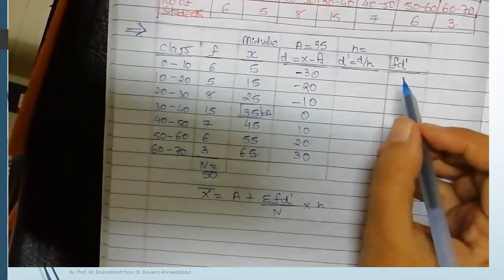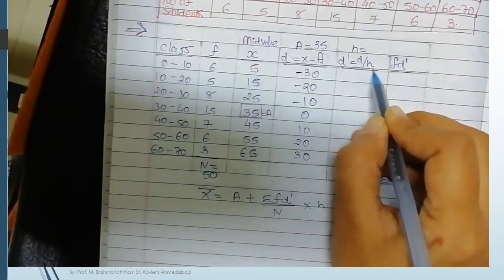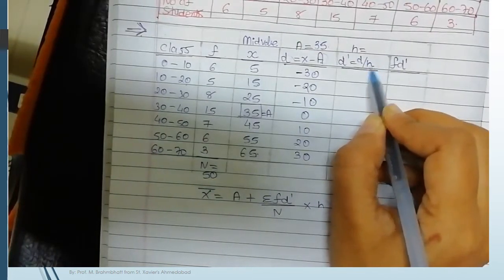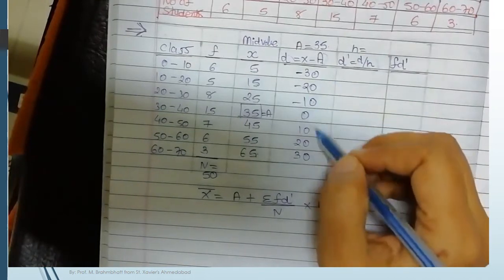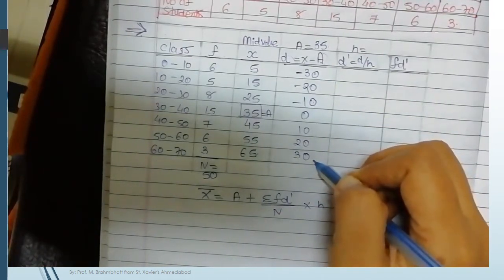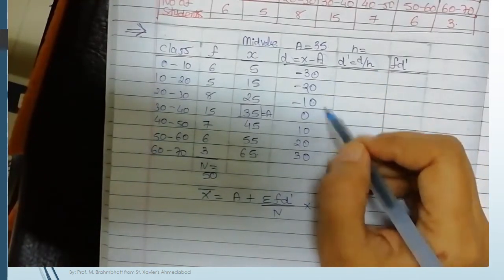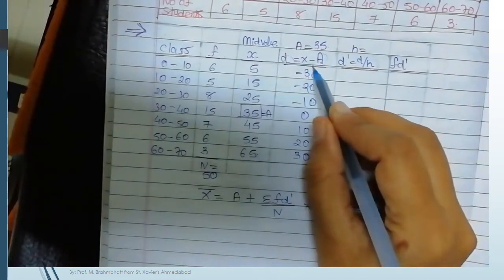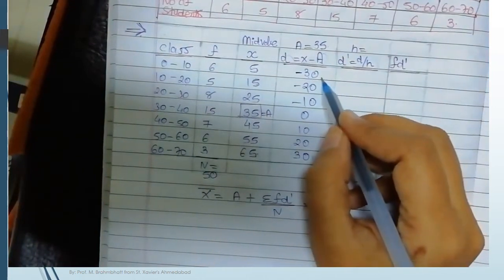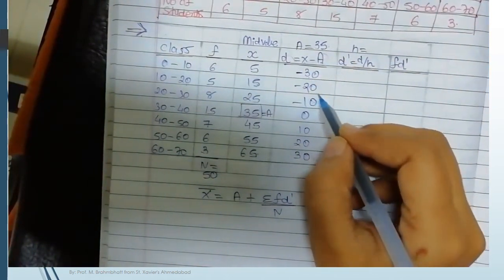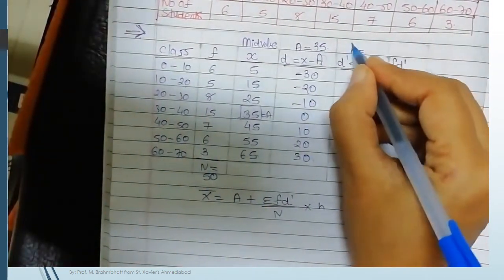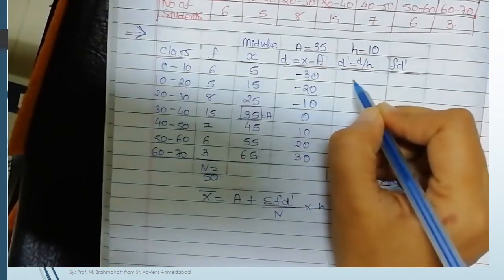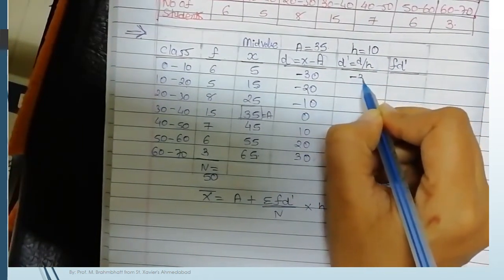Now d-dash equals d divided by h, where h is the highest common factor of the d values. Observing the d values, we can divide each by 10 — for example 30 divided by 10 is valid, as is 20 and 10. So h equals 10.